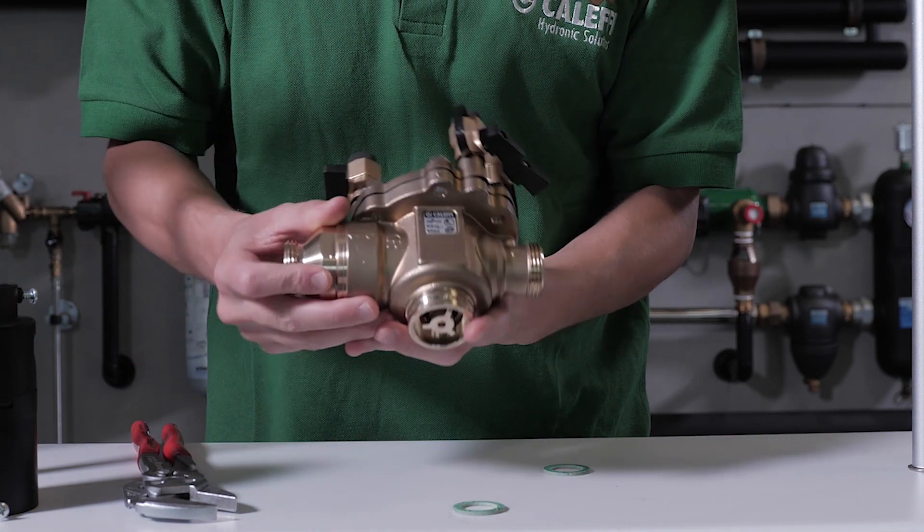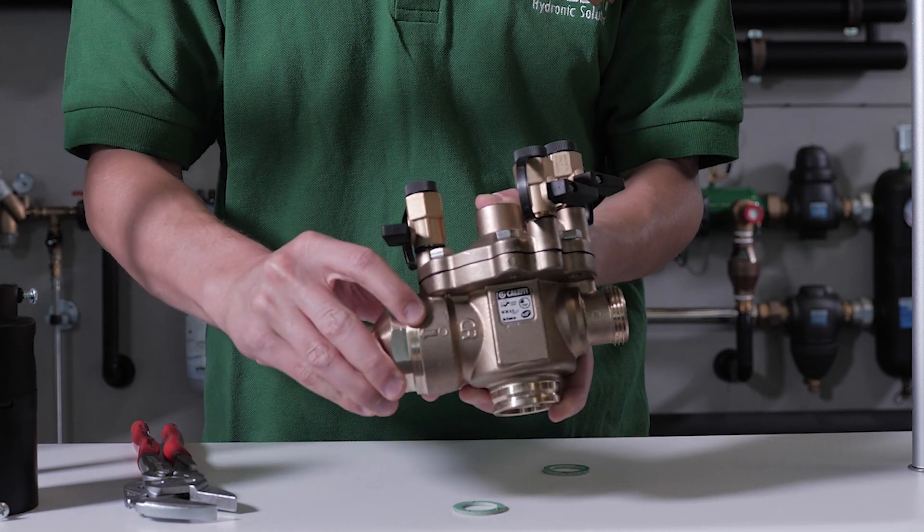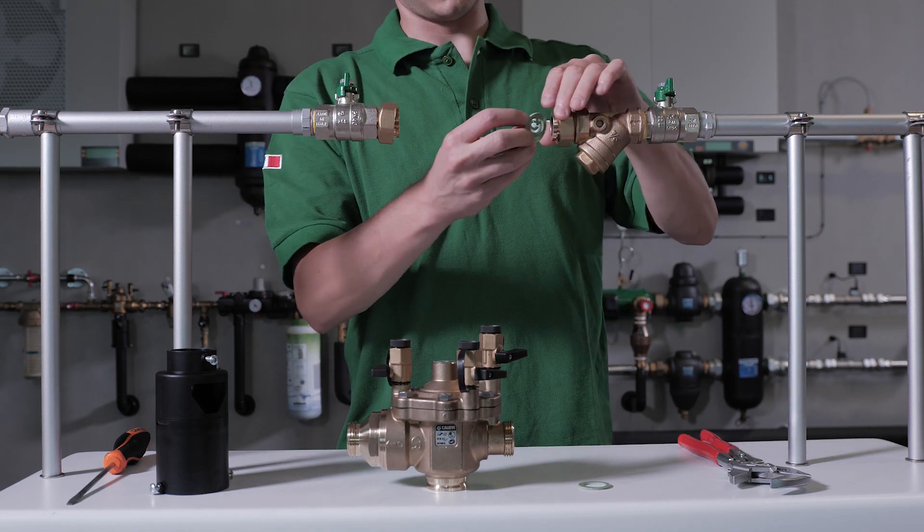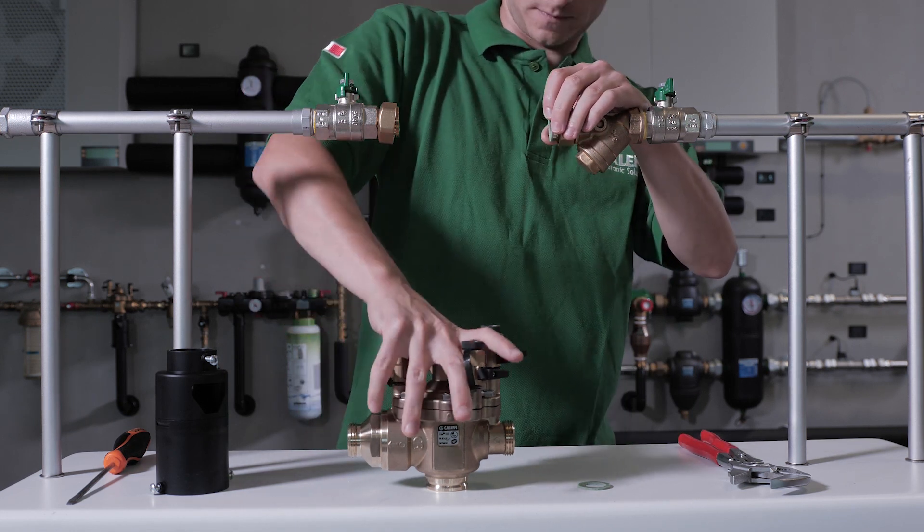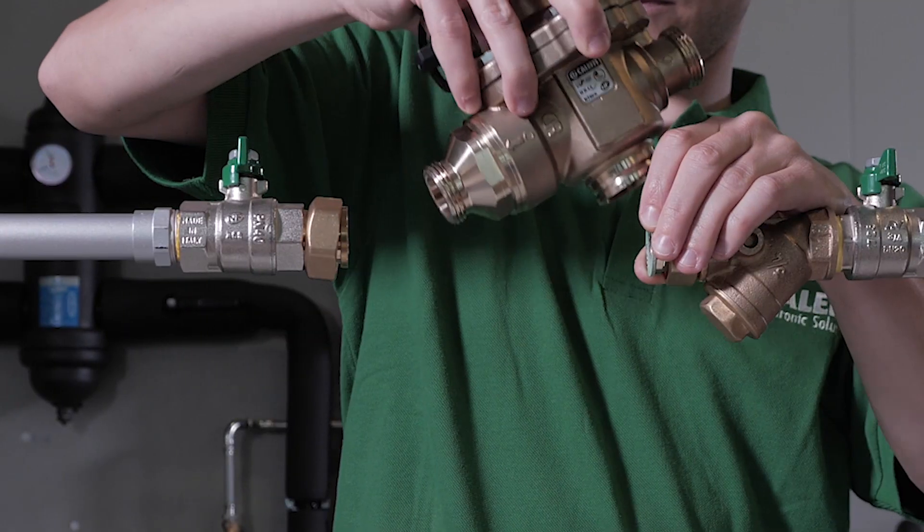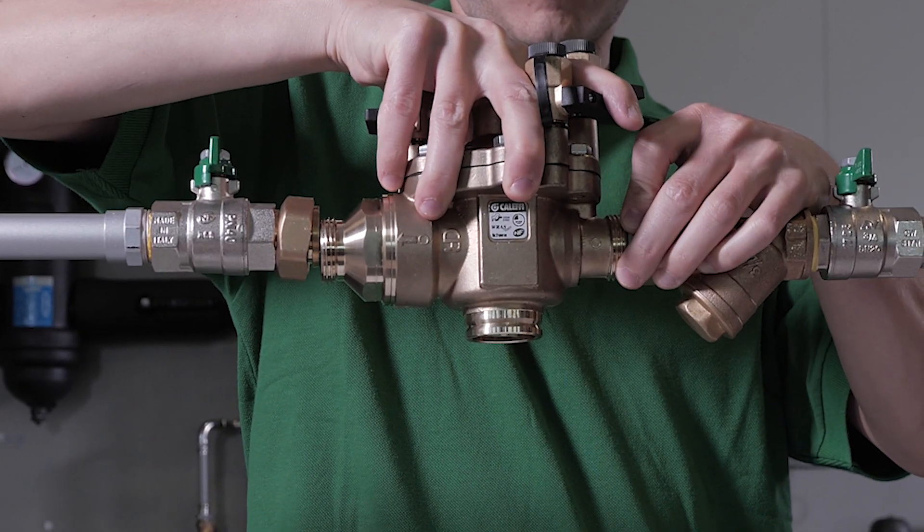Pay attention to the correct positioning of the gaskets. Then install the backflow preventer, paying attention to the correct flow direction marked by an arrow on the body.